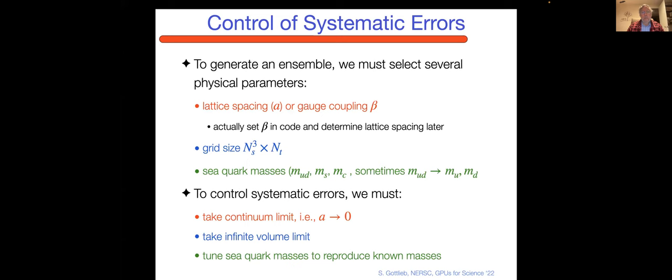You have to tune those properly or you don't get the proper masses in the theory. To control the errors, you have to make the lattice spacing smaller and smaller, a goes to zero. You either take an infinite volume limit or just a big enough box where you don't think the effects are significant. And you have to tune the quark masses to get them right.